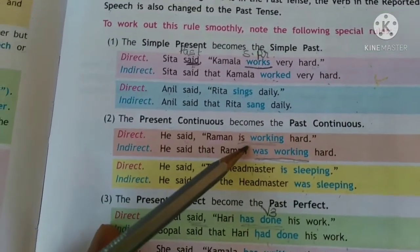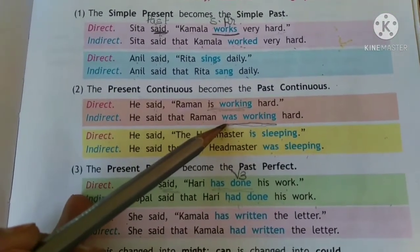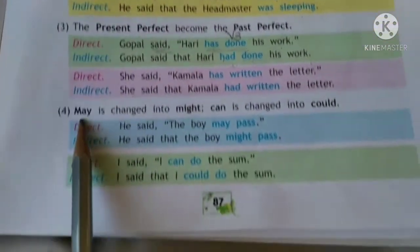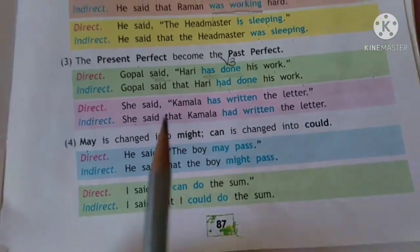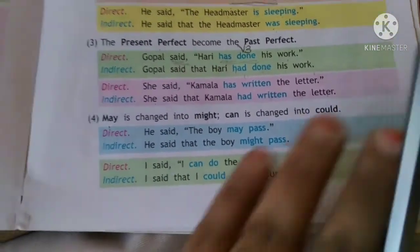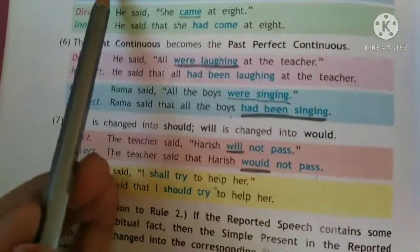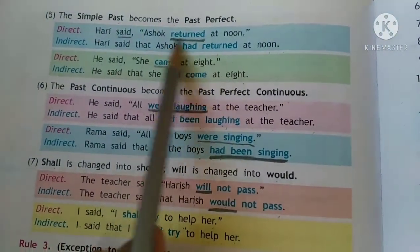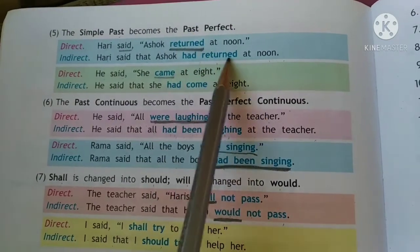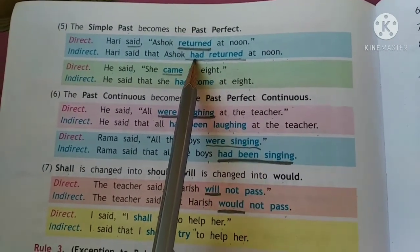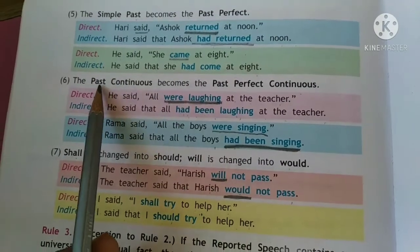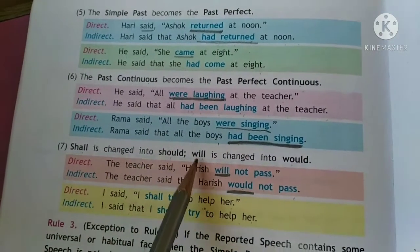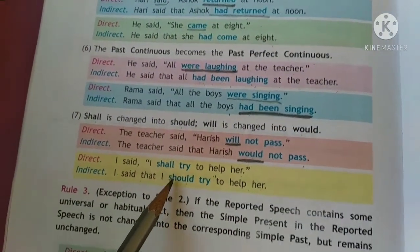If they are in the present continuous, they change into the past continuous. If they are in the present perfect, they change into the past perfect. Then 'may' will become 'might', 'can' will become 'could'. If the reported speech is in the simple past, it will become past perfect. Past continuous becomes past perfect continuous. 'Will' will become 'would' and 'shall' will become 'should'.